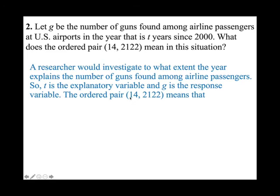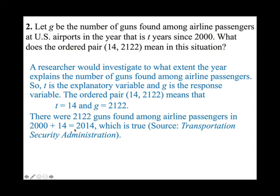T equals 14 means: since T equals 0 at year 2000, T equals 14 gives 2000 plus 14, which is 2014. Therefore the ordered pair (14, 2122) means there were 2,122 guns found among airline passengers in the year 2014.